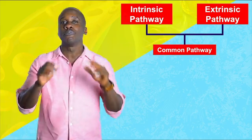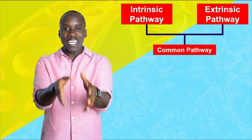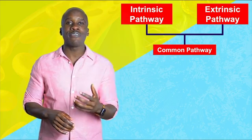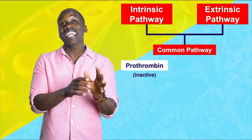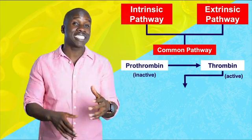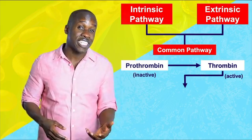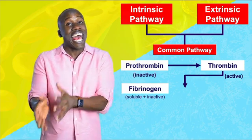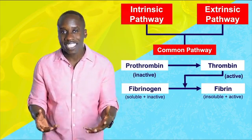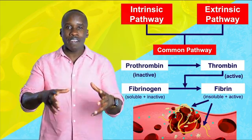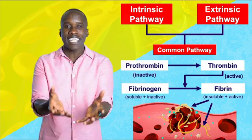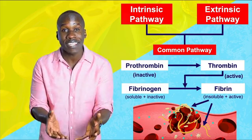Both pathways lead to a common pathway, and here's the key part: in the common pathway, there's an inactive enzyme called prothrombin that gets converted to the active enzyme thrombin. Once thrombin is active, it converts fibrinogen — which is soluble and inactive — into fibrin, which is insoluble and active. The fibrin strands then form that fibrin mesh that holds everything in place so that healing can happen.